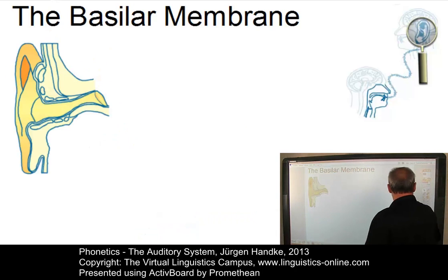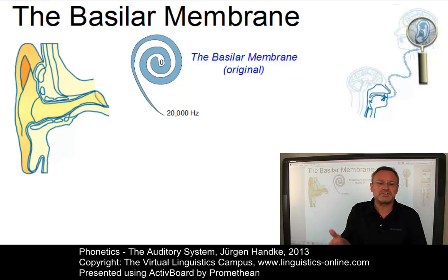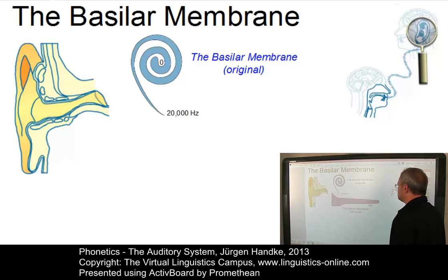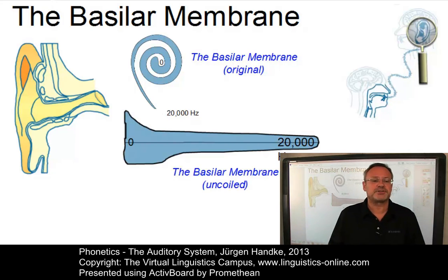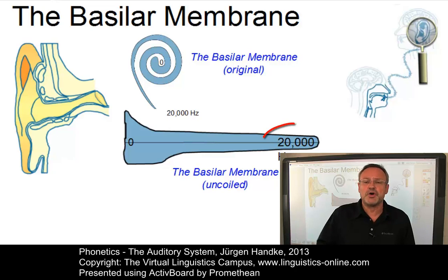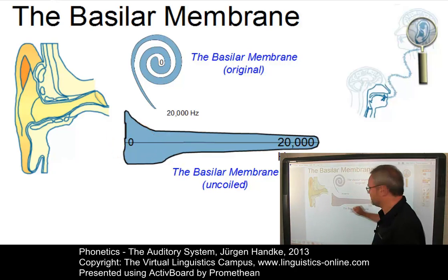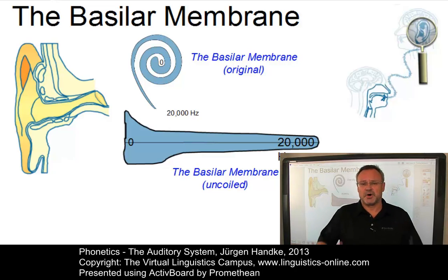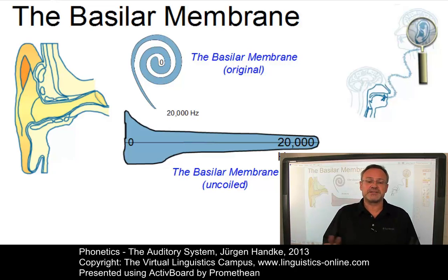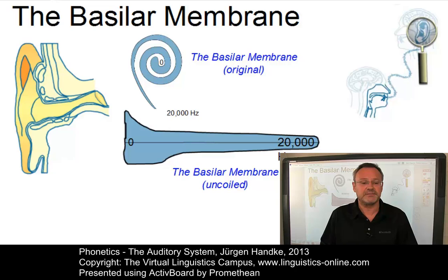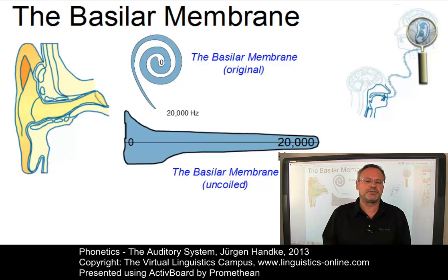Here is the basilar membrane, first coiled like its original form within the cochlea and then uncoiled for a better understanding of its function. In the basilar membrane, different sound frequencies are mapped onto different membrane sites from apex, that is the small end, to its base. The numbers given here provide the frequency in Hertz. On the basilar membrane we have hair cells that bend in wave-like actions in the fluid and set off nerve impulses, which then pass through the auditory nerve to the hearing centre of the brain. Short hair cells respond to high frequencies and longer fibers respond to lower frequencies.